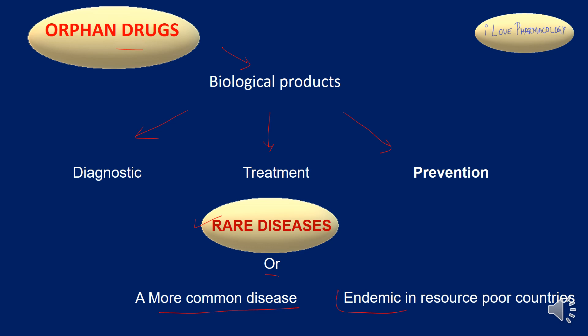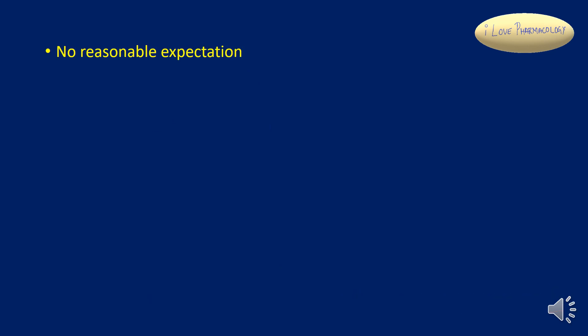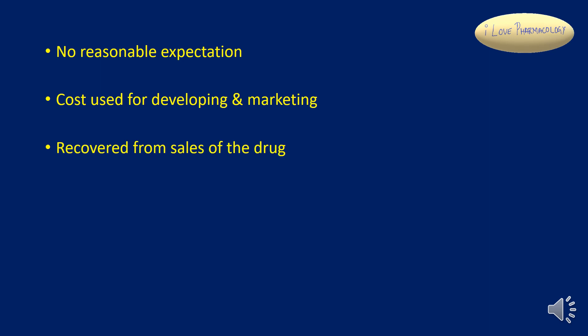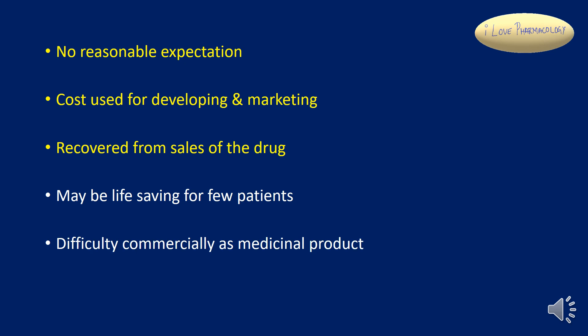Moving on to the explanation: whatever the cost used to produce the orphan drugs, as well as the cost recovered from the market, is very less. Thereby, whatever cost they have spent for research and development as well as marketing, they do not have the expectation that that cost will be recovered from the sales of orphan drugs. So thereby, the company will go for a loss. It may be a life-saving drug for few patients.